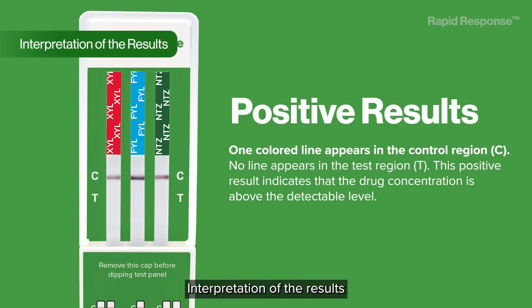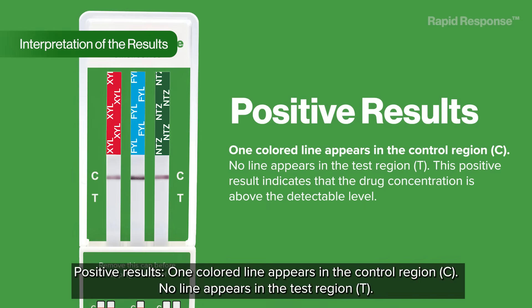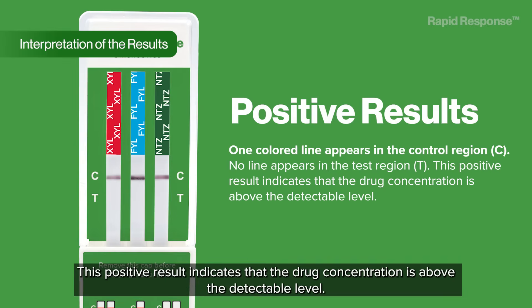Interpretation of the results. Positive results: one colored line appears in the control region and no line appears in the test region. This positive result indicates that the drug concentration is above the detectable level.